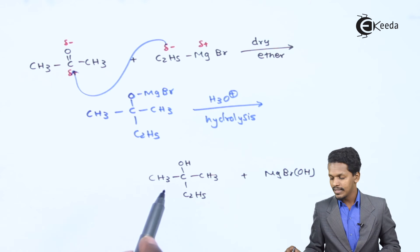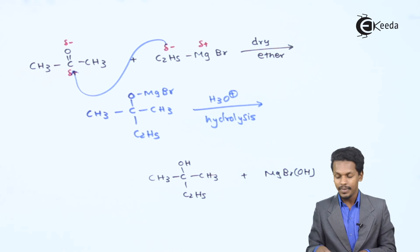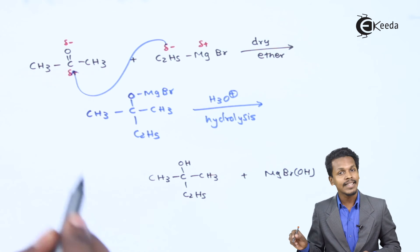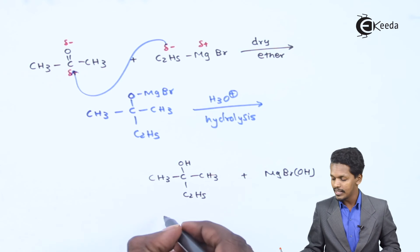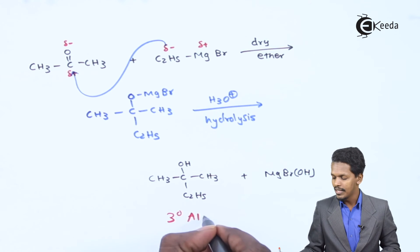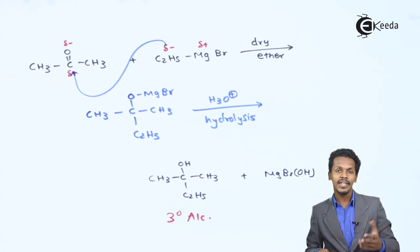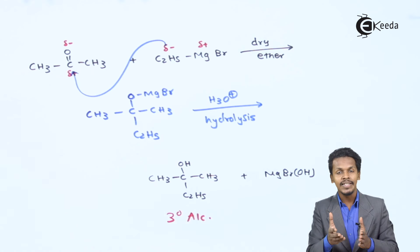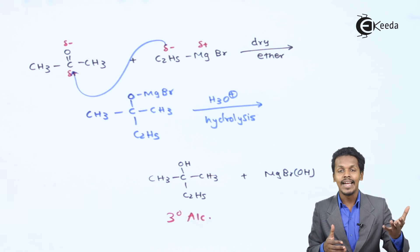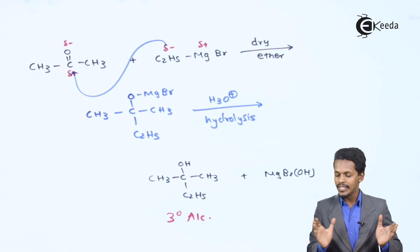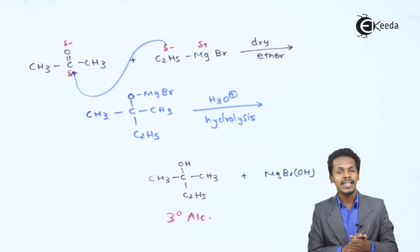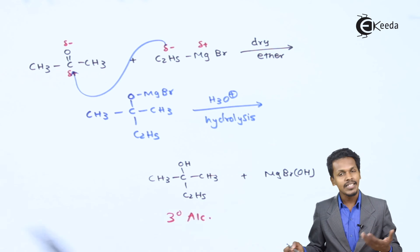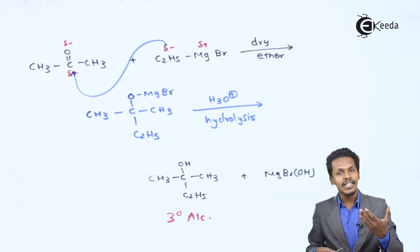Observing this product, the central carbon is a tertiary carbon atom, so the overall alcohol is a tertiary alcohol. This is how we can obtain a tertiary, secondary, or primary alcohol by using Grignard reagent reacted with an aldehyde or ketone. Regarding IUPAC nomenclature for this product, we need to count the carbon chain.